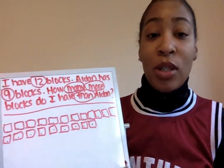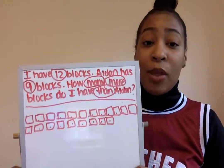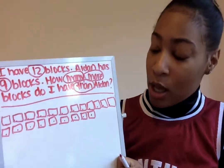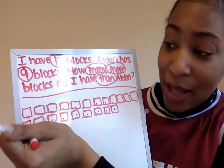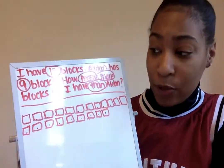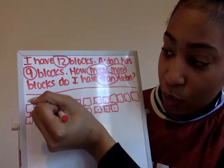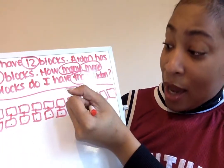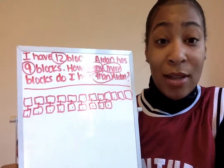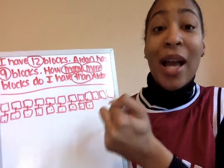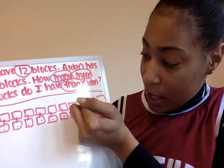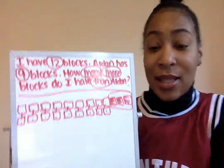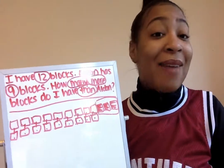Now, since we know the question wants to know how many more blocks do I have than Aiden, and we're going to be doing subtraction, follow along and watch how Ms. Washington does it. I'm going to match our blocks all the way until there's no more to match — one, two, three, four, five, six, seven, eight, nine. Oh no, there's no more to match! So now I'm going to count how many more is left: one, two, three. So I know that I have three blocks left and Aiden doesn't have any blocks left.